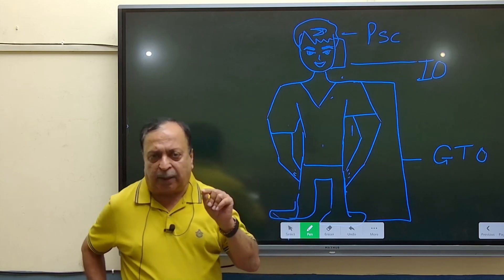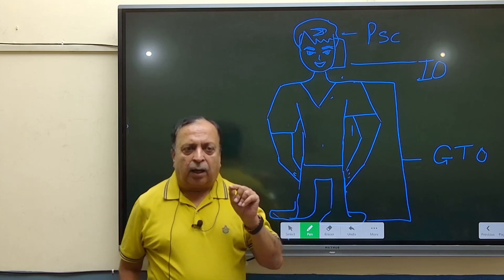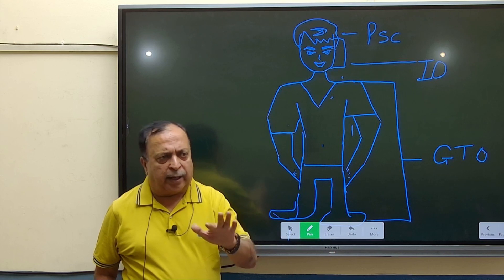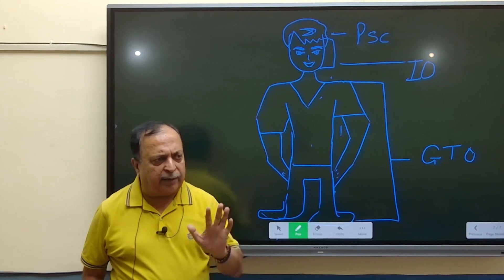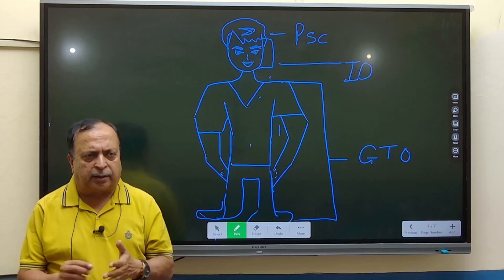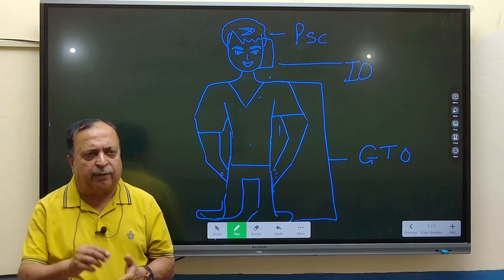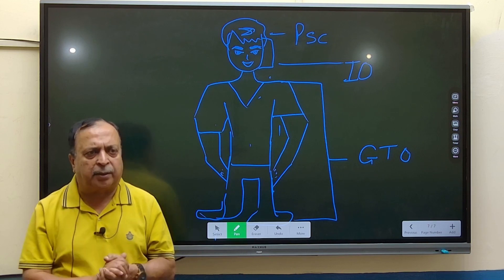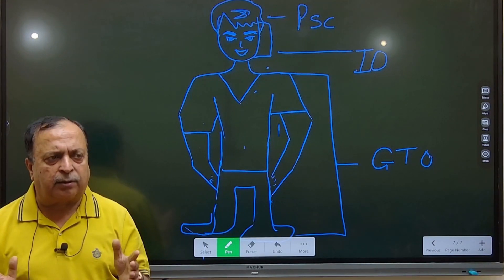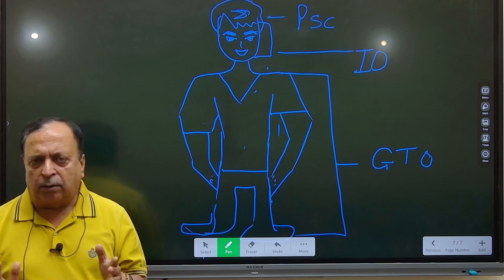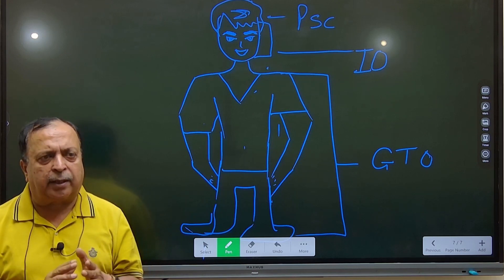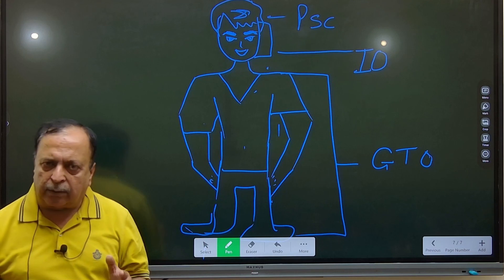When you go for the SSB, after your morning documentation is over, you are told to have breakfast and then they take you to a room where your first test is conducted — the OIR, which stands for Officer Intelligence Rating.